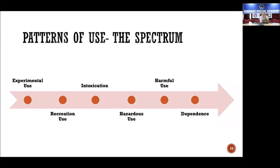Not everyone who experiments with substances becomes addicted: of 100 people who try nicotine, only 30 will become addicted; of 100 who try alcohol, only 10 will be addicted. Addiction follows a progressive path — from experimental use, to intoxication as the first milestone where things go beyond control, to hazardous use, harmful use, and finally dependence. Dependence is the end stage of the condition.